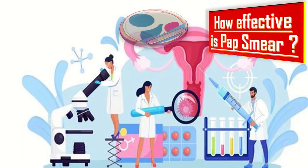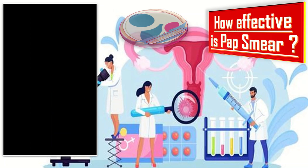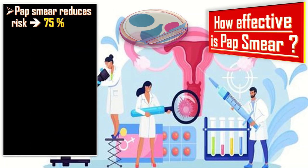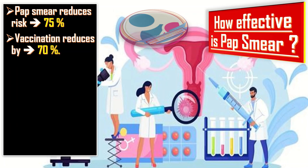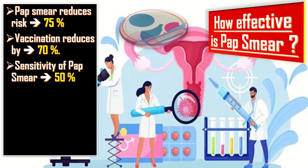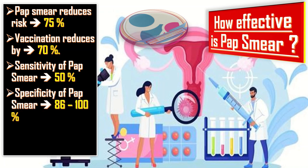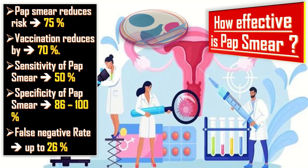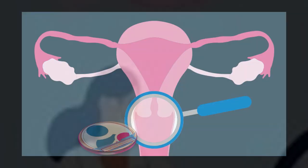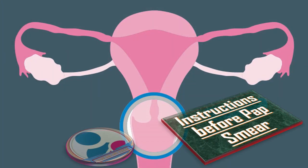How effective is pap smear? Pap smear reduces the risk of cervical cancer by 75%, whereas vaccination reduces the risk by 70%. Sensitivity of pap smear is about 50%. Specificity of pap smear is about 86 to 100%. The false negative rate of pap smear is up to 26%.